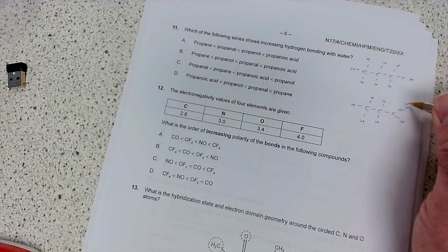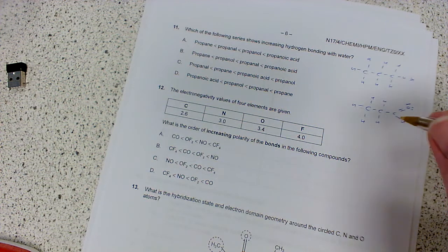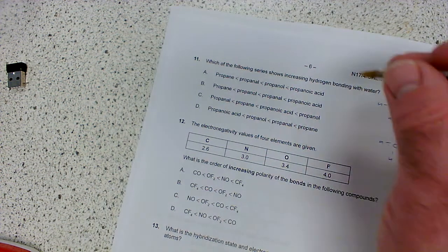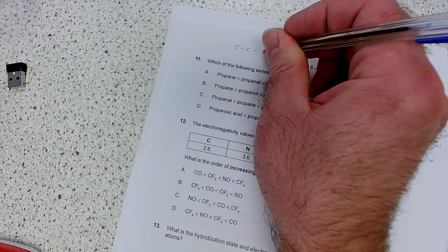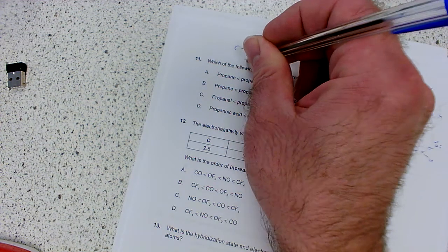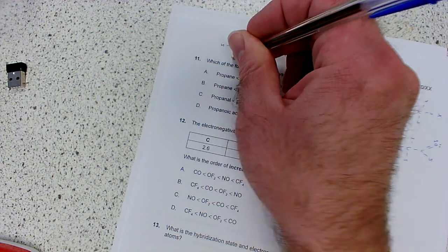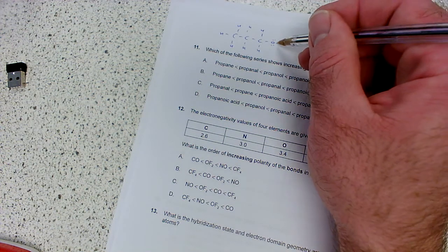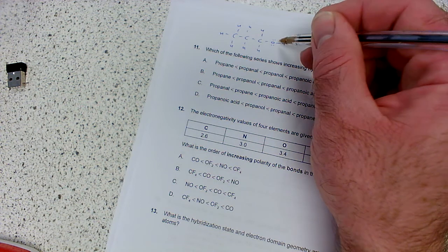It can't initiate hydrogen bonding but it can participate because the water supplies the OH bonds. Let's consider propanol - that's one, two, three carbons and then an OH on there. So now we've got an OH bond plus we've got lone pairs on the oxygen.